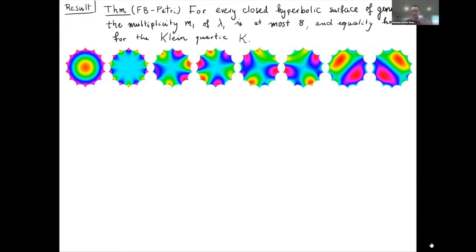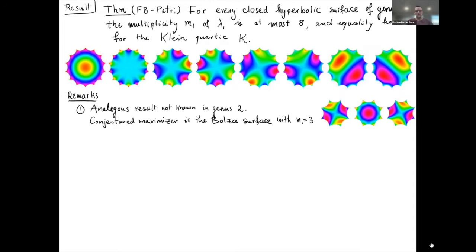The goal is to talk about the proof of this result today. I like the proof because it combines many different techniques. Before that, let me give some context. One maybe surprising fact is that the analogous result is not known in genus two. The best surface we know for the multiplicity among hyperbolic surfaces is the Bolza surface, which is the most symmetric surface in genus two, and it has multiplicity equal to three. But the best upper bound we can prove in that genus is six, so there's still a gap.